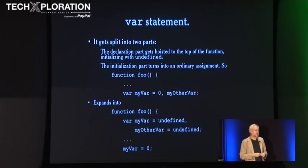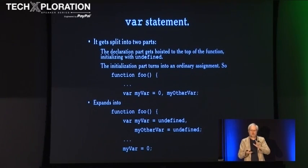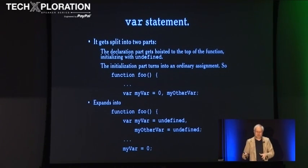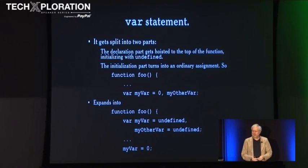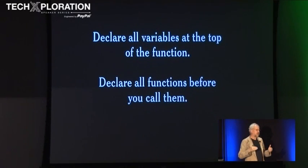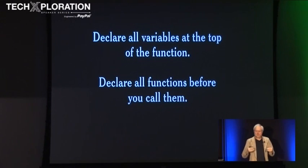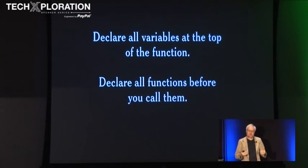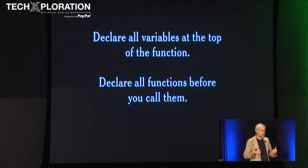In JavaScript you declare variables with a var statement, and every var statement gets split into two parts — the definition part gets moved to the top of the function and runs before any of the rest of the code. You may think you're declaring a variable within a block, but you're not. You might even declare the same variable twice in two nested blocks thinking they'll be two different variables, but both get hoisted with no error generated. So in JavaScript I recommend declaring all of your variables at the top of the function, because that's actually where they're going to be declared anyway. If you make your program look like what it does, it's less likely to cause confusion.